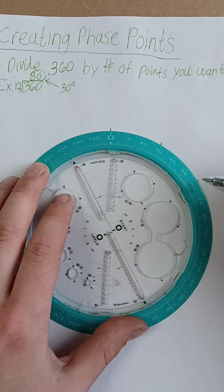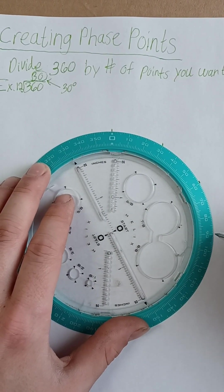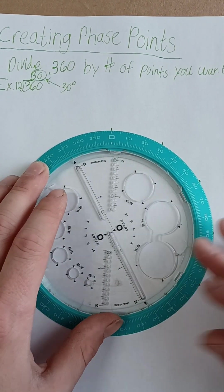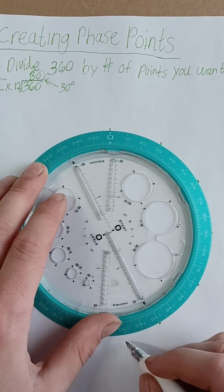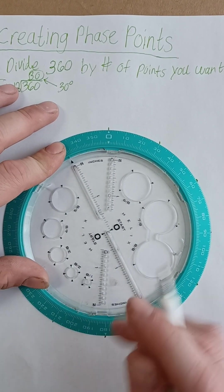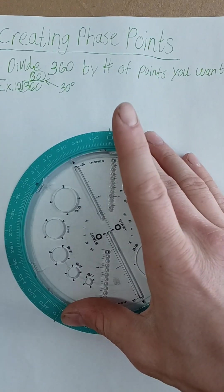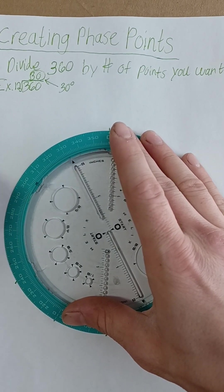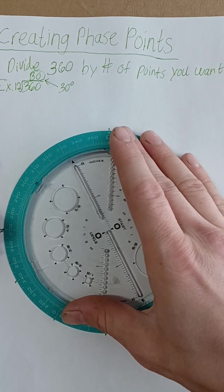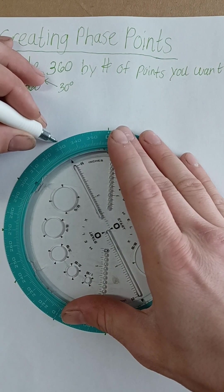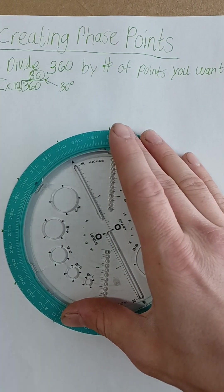Now that right here is the degrees that you want to divide 360 by. So I can make a point at every 30 degrees. I can make that a little more accurate. 90, 120, 150, 180, 210, 240, 270, 300, 330.